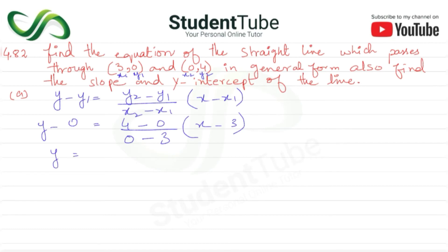So y is equal to (4 minus 0) upon (0 minus 3), which is 4 upon minus 3, or minus 4 upon 3, times (x minus 3). Taking minus to the other side, we get minus 4 upon 3 times (x minus 3). Multiplying by 3, we get 3y is equal to minus 4x plus 12.